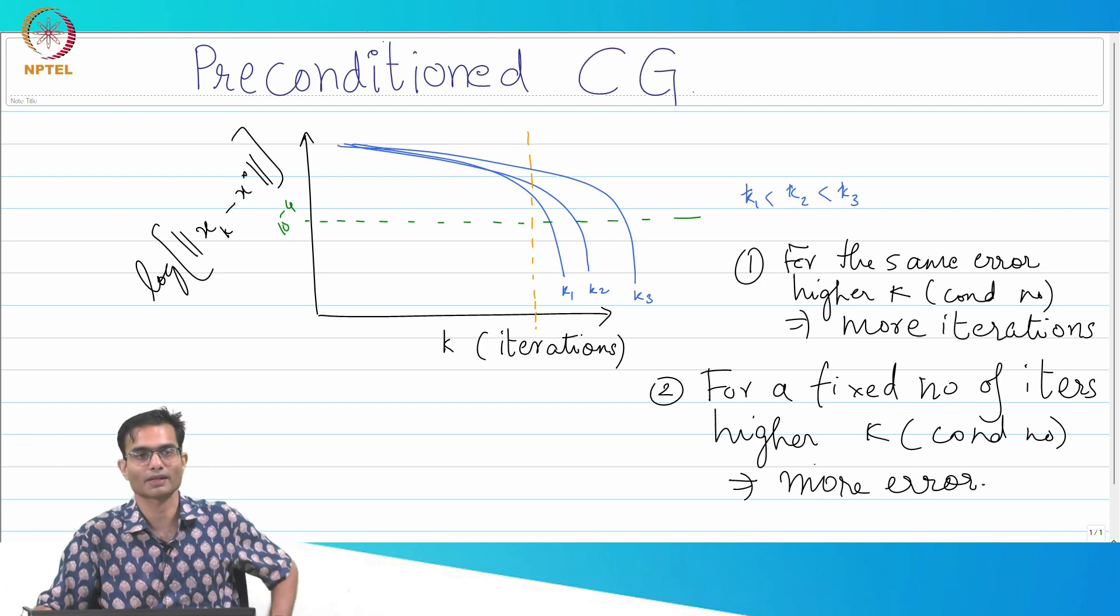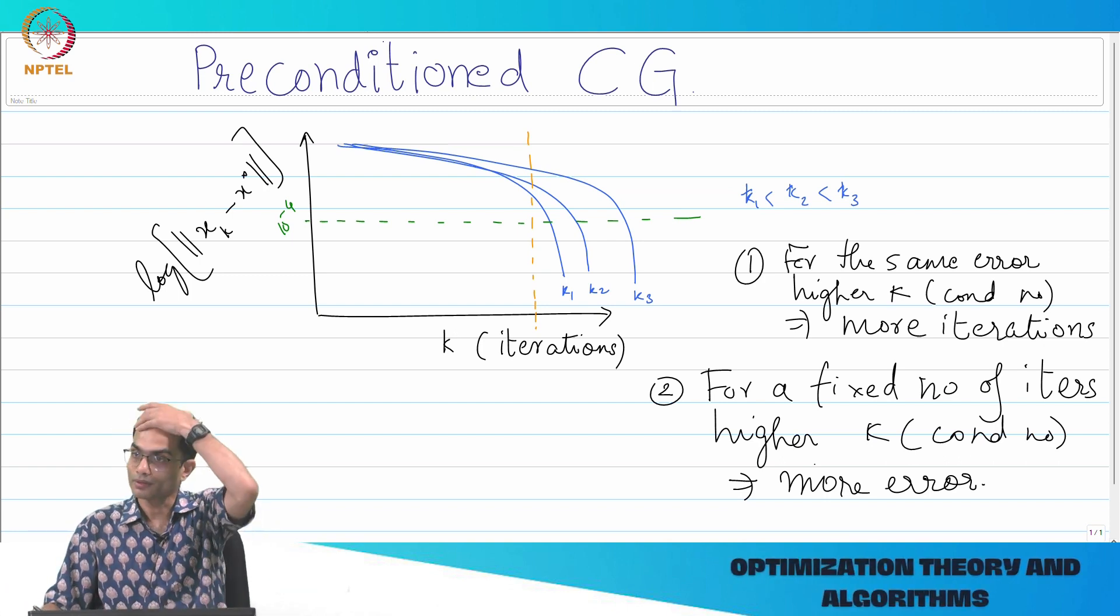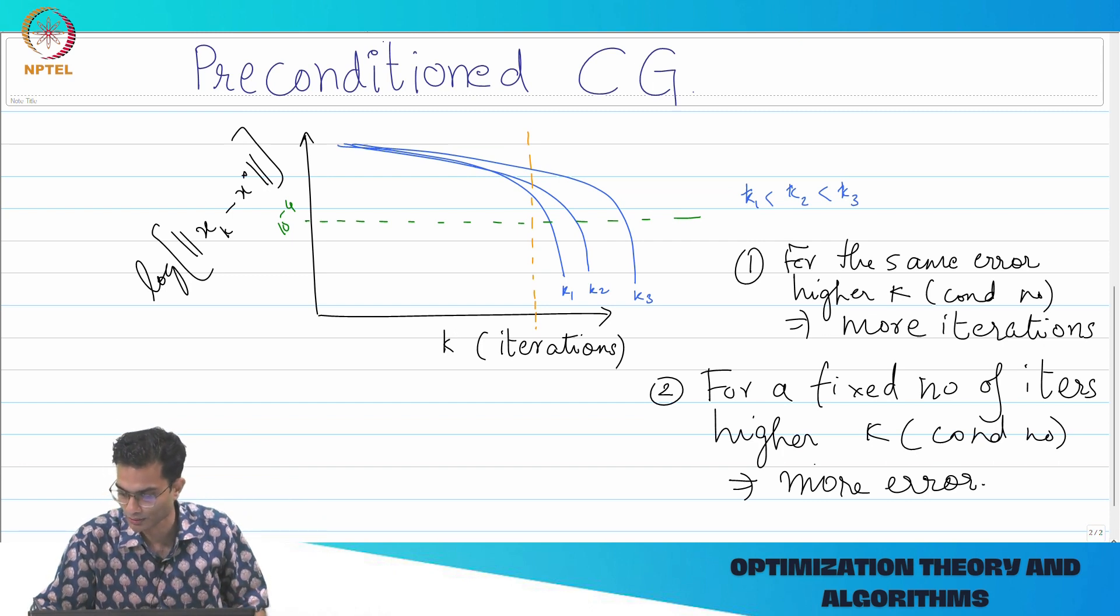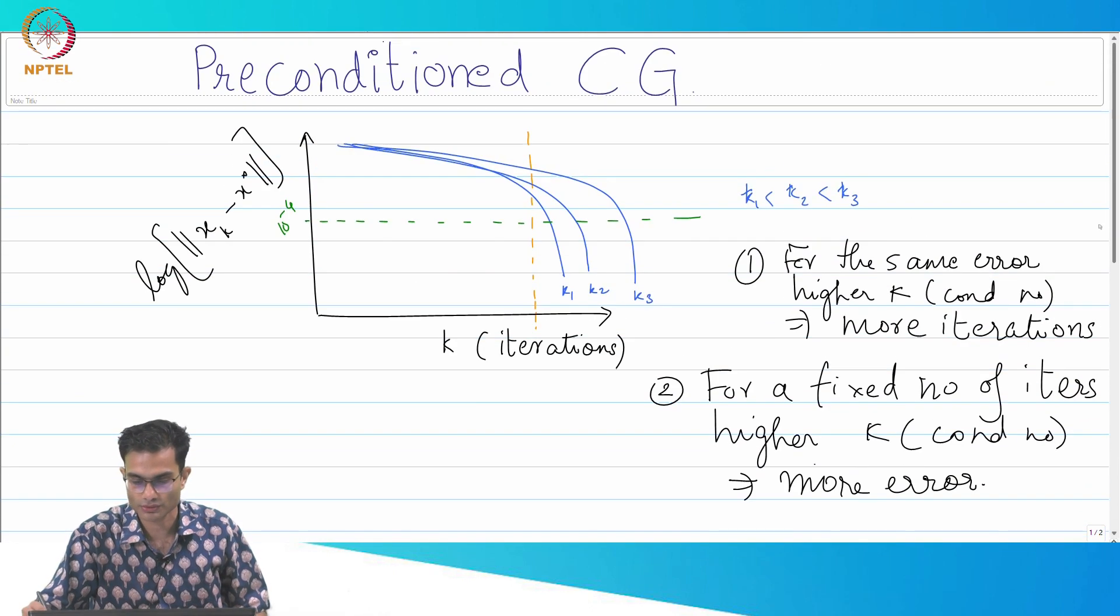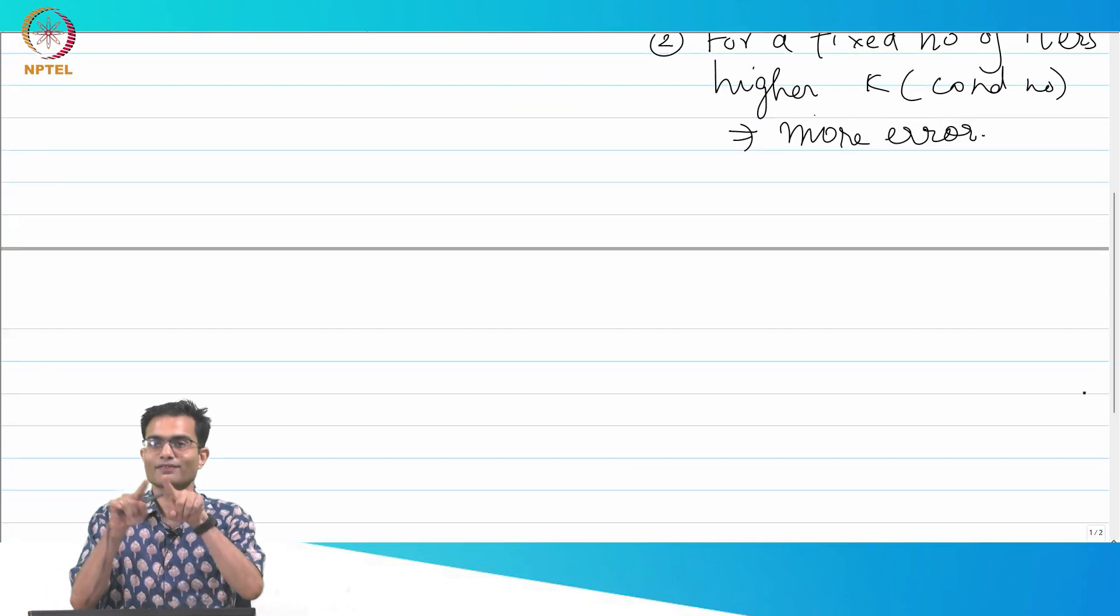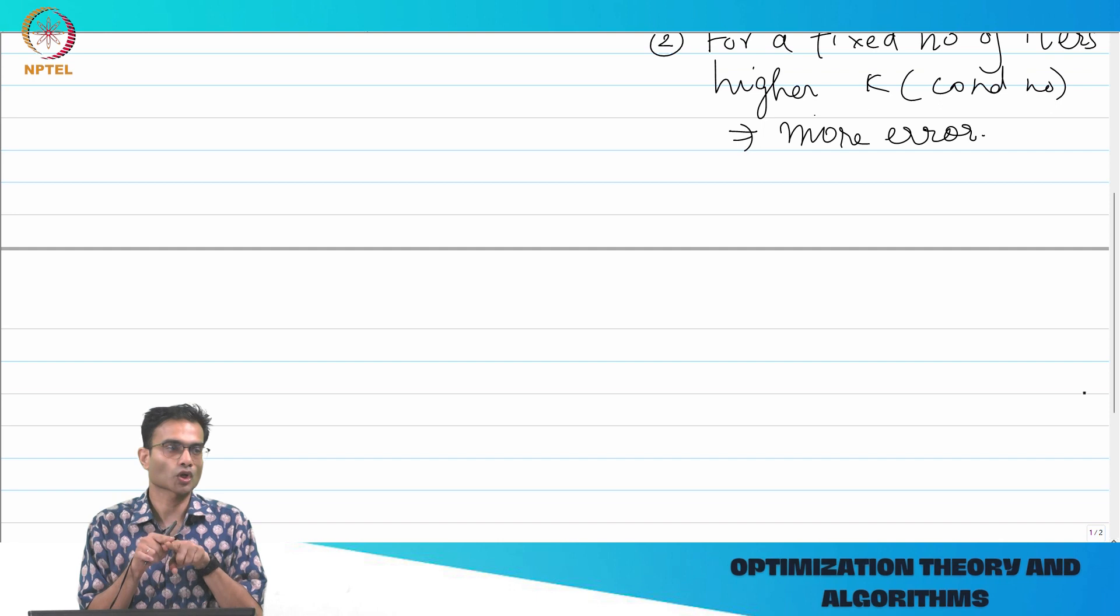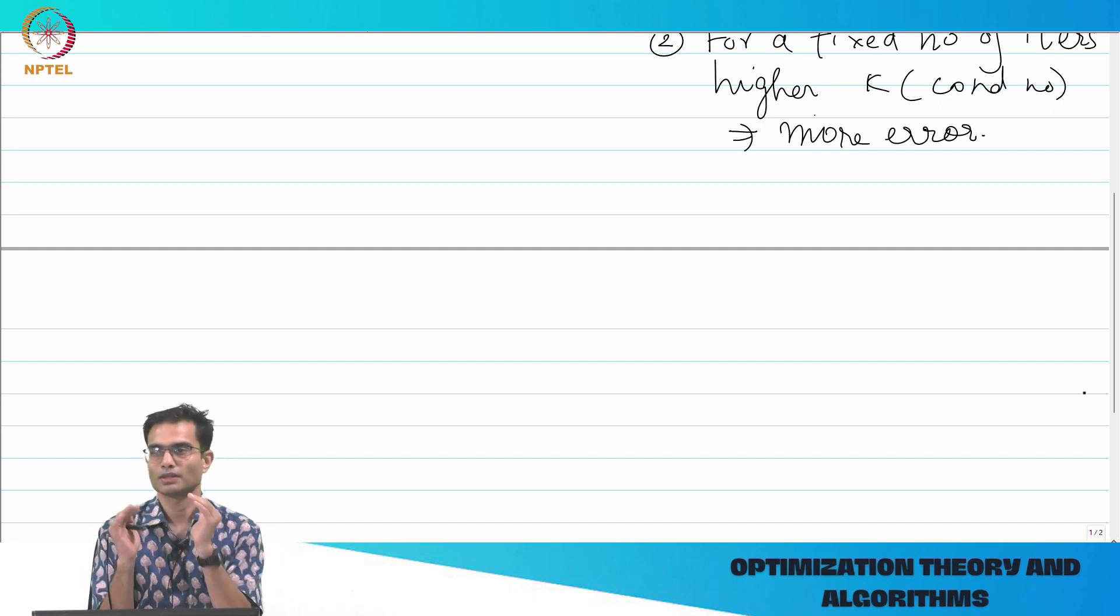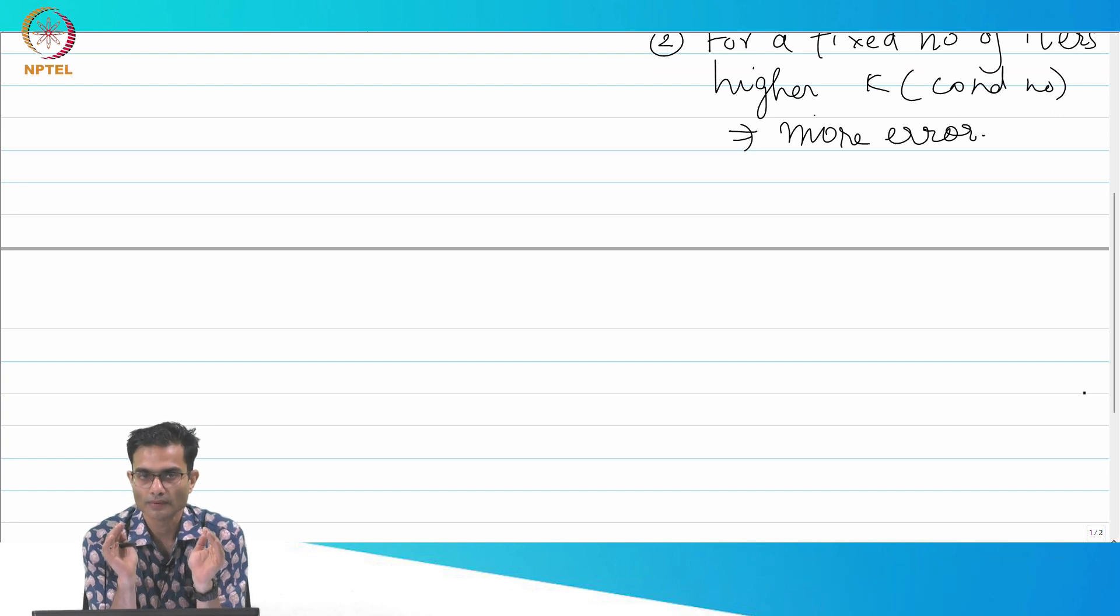Those are the two very basic observations that I can make by looking at this graph. Obviously people looked at this and said hey is there a way to improve this? That's what leads to this idea of preconditioned conjugate gradient method. We're going to stay within the arena of conjugate gradient method, which means I have my CG routine, I'm constrained to use it.